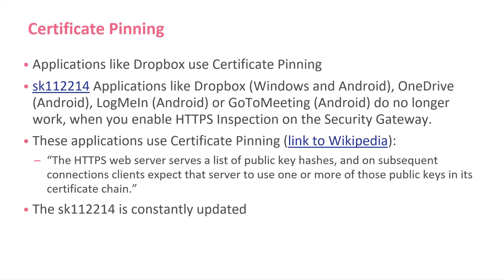Dropbox, OneDrive, LogMeIn, GoToMeeting — if you turn on HTTPS inspection, they won't work because they use certificate pinning. There is an SK that you would want to check out on how to approach that, and this SK is constantly updated.